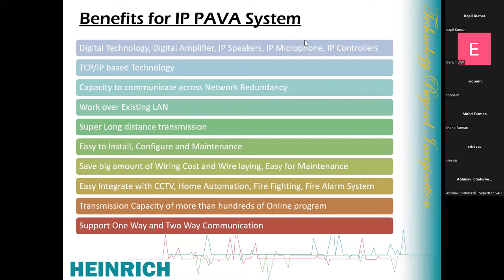The system supports both one-way and two-way communication. We have intercom devices over IP that integrate with the same IP PA system, enabling two-way communication as well. If your central command center needs two-way communication with another control room, you can install our two-way communication devices there. The same server, same controller, and same LAN device are used — there is no need to add anything extra. The same microphone is used for both one-way and two-way communication.